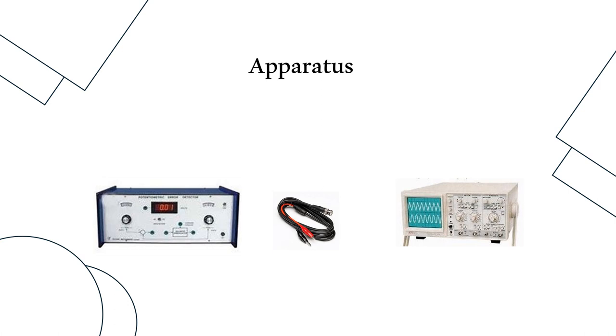The apparatus consists of the potentiometric error detection kit, which basically contains two servo potentiometers, unit gain instrumentation amplifier, demodulator and a 3.5 digital voltmeter. It can operate in DC and AC mode, about which we will discuss in a minute.